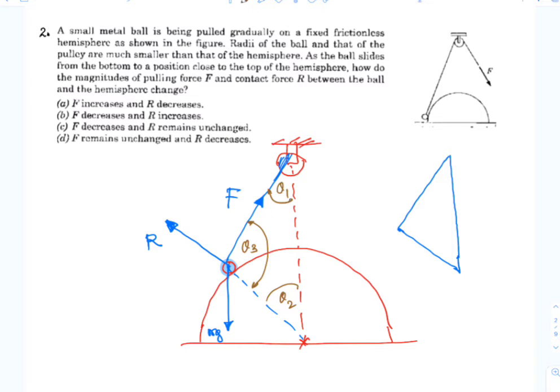Now you see, in this vector triangle, these are the same angles: theta 2, theta 1, and theta 3.